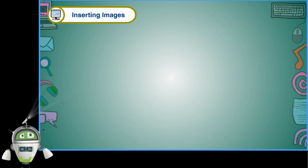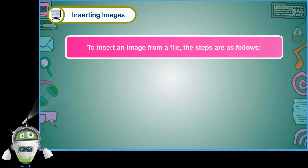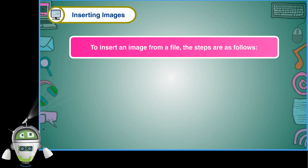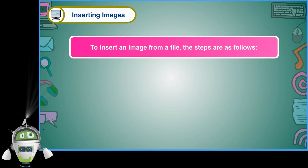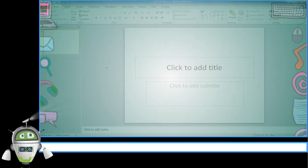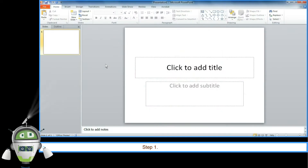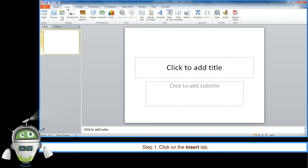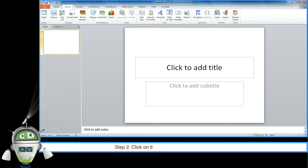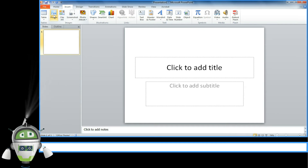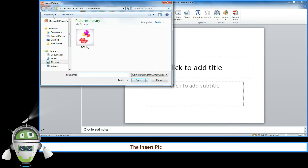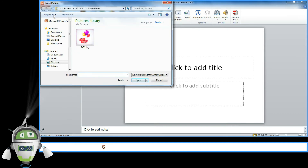Inserting images: to insert an image from a file, the steps are as follows. Step 1: click on the Insert tab. Step 2: click on the Picture option in the Images group. The Insert Picture dialog box will appear.